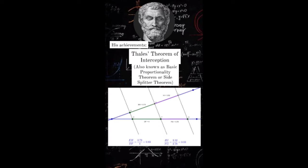He also proposed the Thales theorem of interception. This theorem is also known as the basic proportionality theorem or side-splitter theorem.